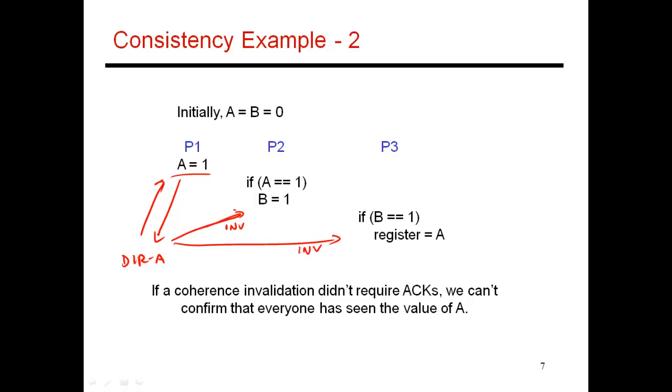It's possible that this invalidation has reached P2, but this invalidation is stuck in some kind of network traffic and doesn't reach P3 for a really long time. So let's assume that's what happens.